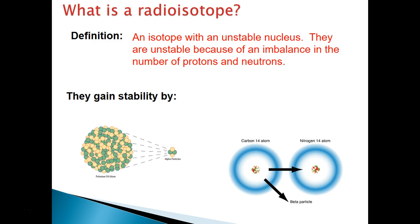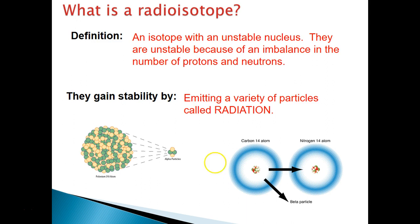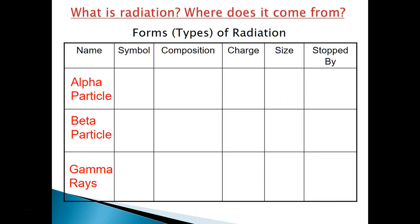A radioisotope can become stable by emitting a variety of particles — we call these emitted particles radiation. Here we have polonium-210 becoming more stable by spitting out an alpha particle. Carbon-14 can transmute into nitrogen-14 by spitting out a beta particle. We have three types of radiation: alpha particles, beta particles, and gamma rays.